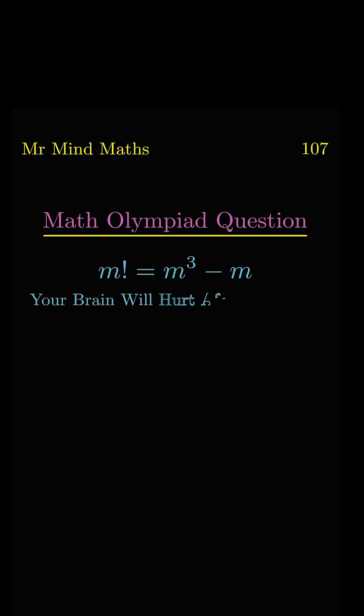In this video we will learn a very important and interesting Math Olympiad question and we will clear a very important concept of mathematics. We know that n factorial is equal to n times n minus 1 factorial.